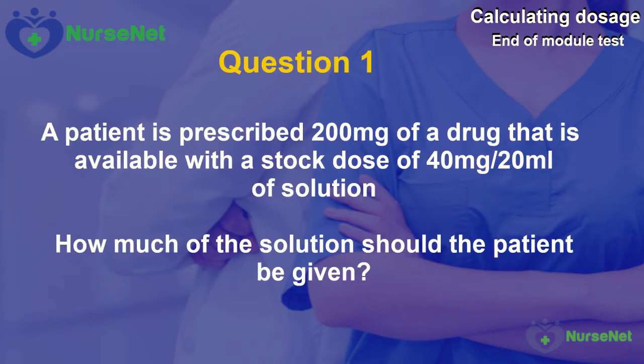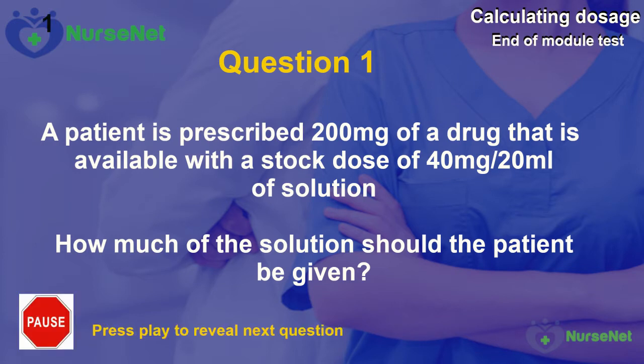Question 1. A patient is prescribed 200mg of a drug that is available with a stock dose of 40mg per 20ml of solution. How much of the solution should the patient be given?